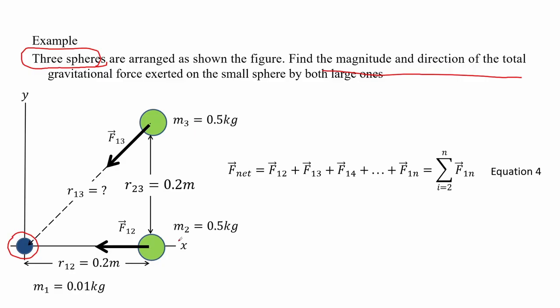To solve the problem we apply equation 4, where we sum the forces exerted on the mass of interest, which is mass m1. We have to apply the component method and the Pythagorean theorem to solve for the net force and its direction.